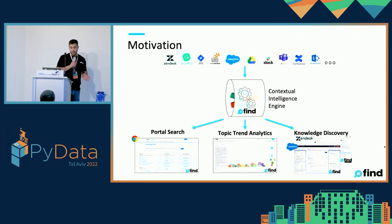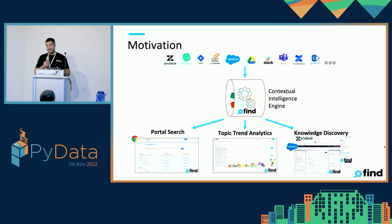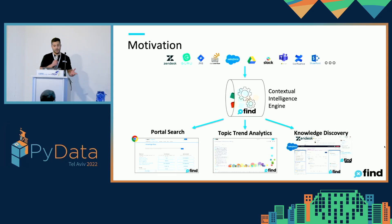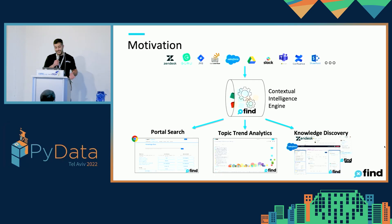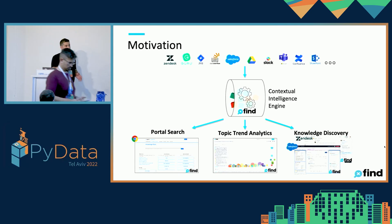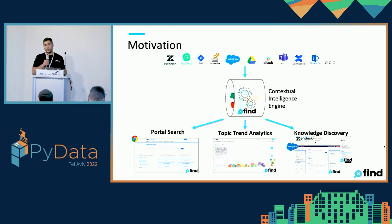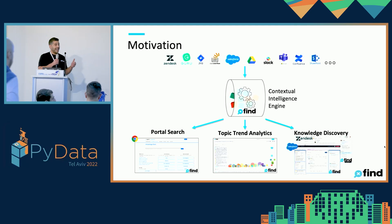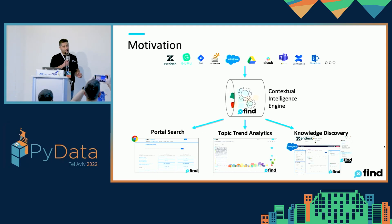Essentially what we do is we connect to all of our customers' knowledge — this can be anything from Slack channels to knowledge bases and CRMs. We process all that data and feed it into our Contextual Intelligence Engine, which allows us to bring our customers accurate information in context to whatever they're doing, with analytics and insights, without them having to tag it or search for it.